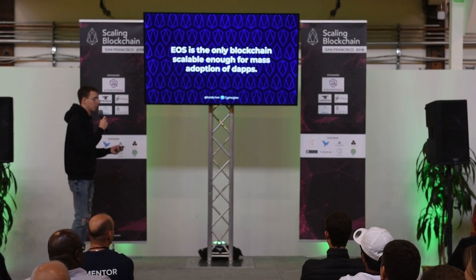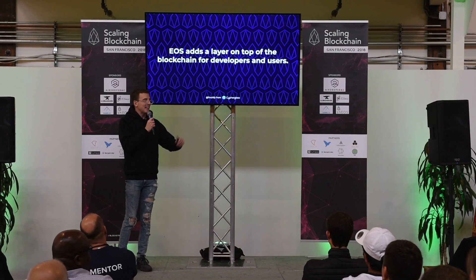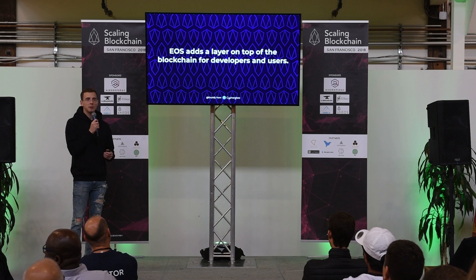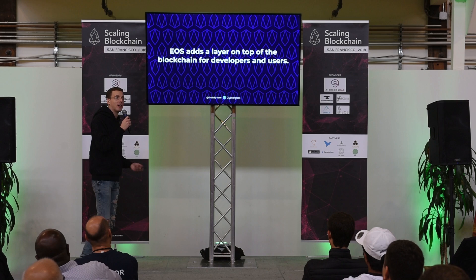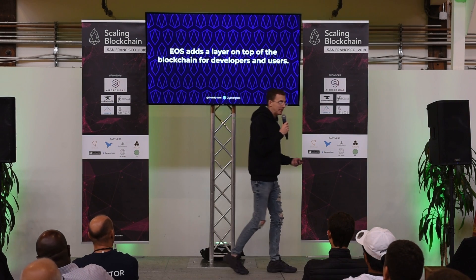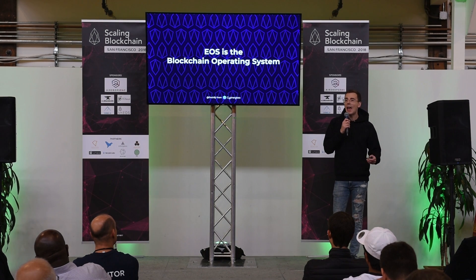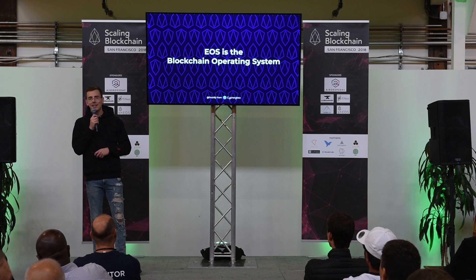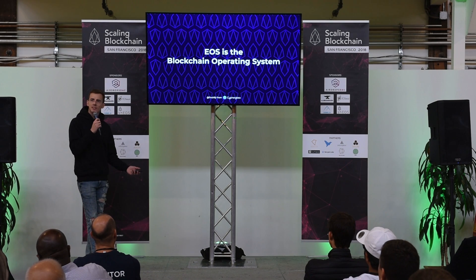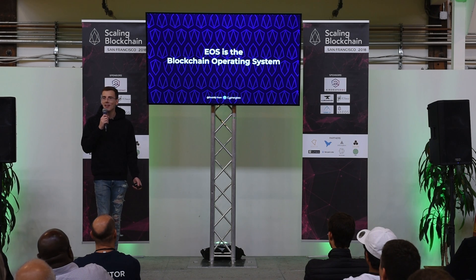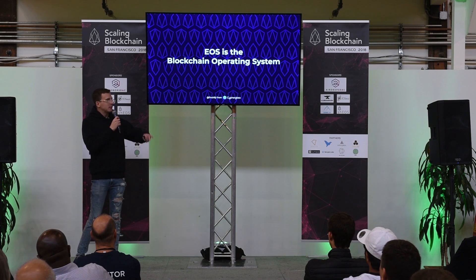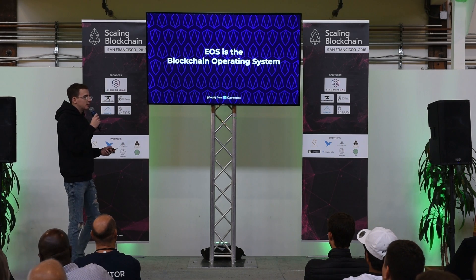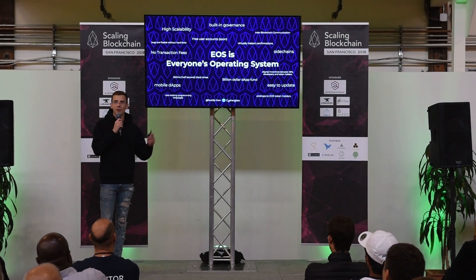EOS adds a layer on top of the blockchain for developers and users, just like Windows added a layer on top of MS-DOS — enabling developers to build apps more easily and users to use apps without knowing code or typing command-line instructions. That's why I believe EOS is the blockchain operating system we need, with an impact on crypto similar to what Windows had on making computers mainstream. People ask what 'EOS' stands for — earth's operating system, exponential operating system — but based on everything presented today: the scalability, governance, and the dApps it has enabled, I'd argue EOS stands for everyone's operating system.